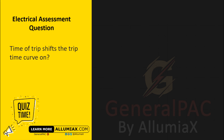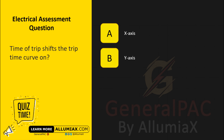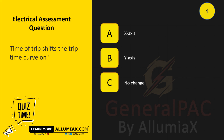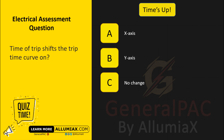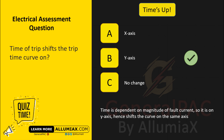Time of trip shifts the trip time curve on: A. X axis. B. Y axis. C. No change. The answer is B. Time is dependent on the magnitude of fault current, so it is on the Y axis, hence shifts the curve on the same axis.